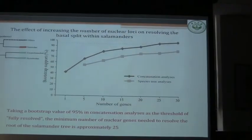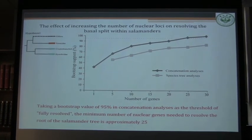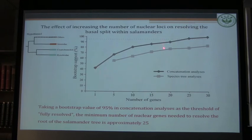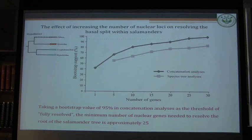If you ask how many loci are needed to robustly resolve high-level salamander family trees, we did a simulation where we randomly deleted genes from our dataset and drew a curve. If you consider a bootstrap value of 95 as the threshold for fully resolved, you need at least 25 nuclear loci to achieve those values. That explains why Roland and Pyron could not get very high bootstrap support for their results — they were lacking sufficient nuclear markers.